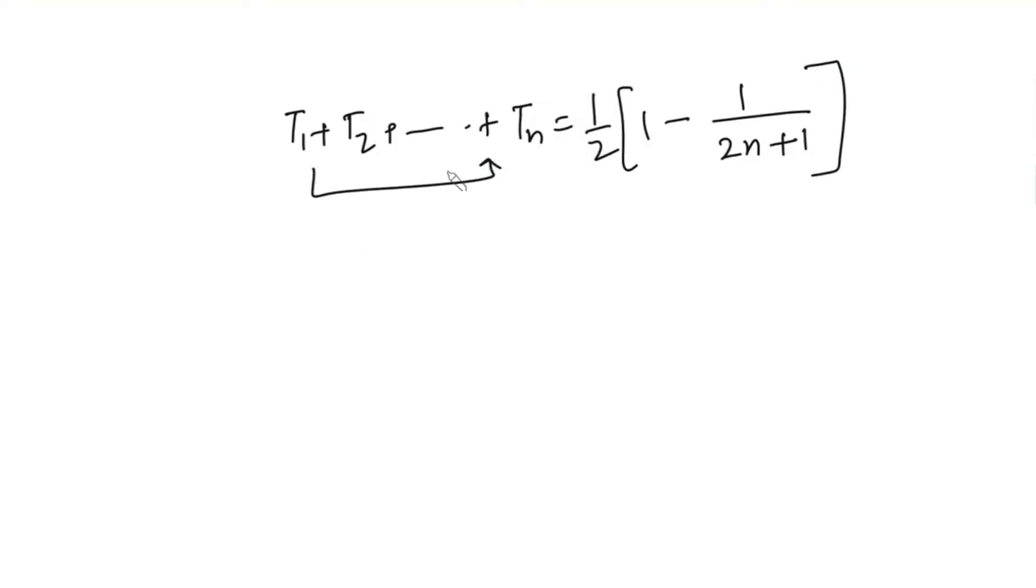This is the sum of the series. That is, S equals 1/2, and we can take the LCM. So it's (2n+1) minus 1, which is just 2n over (2n+1). We can cancel the 2, so we have n/(2n+1). And that is the sum of the given series.